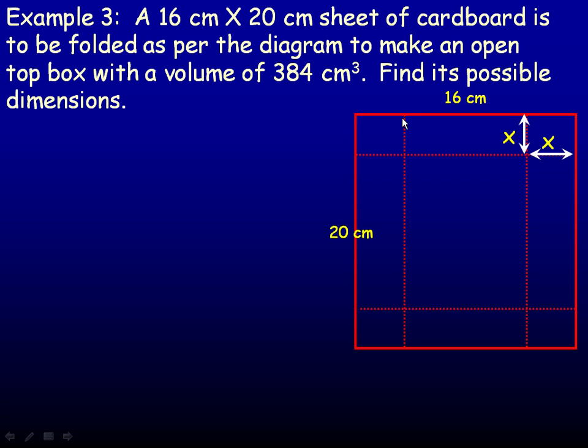this would be an x down here. We could call the distance across here, it's the whole 16 minus an x and another x, so we could call that 16 minus 2x.